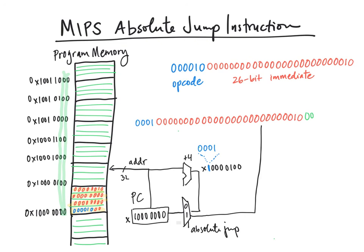The most common question that people ask after learning about the absolute jump instruction is, what if I want to jump really far away and I don't want the upper four bits to be the same as PC plus 4? Well, the MIPS instruction set has other jump instructions you can use, and you'll have to use one of those.